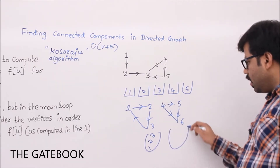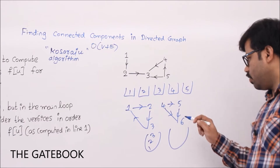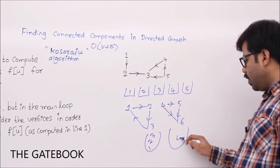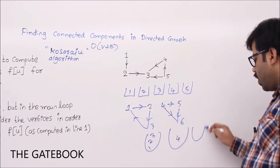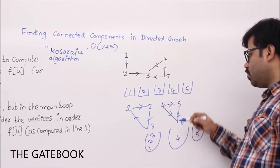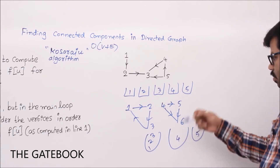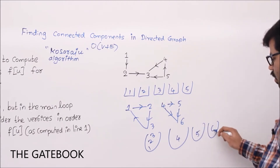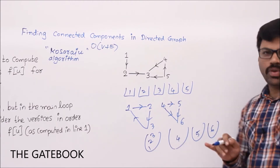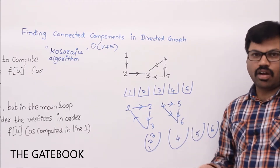From anything to anything in {1,2,3} we can reach — that is what's important. For the other part: 4 to 5 we can reach but 5 to 4 we cannot, so 4 and 5 are separate components. 4 to 6 we can reach but 6 to 4 we cannot; 5 to 6 we can reach but 6 to 5 we cannot. So altogether there are 4 connected components in this graph.